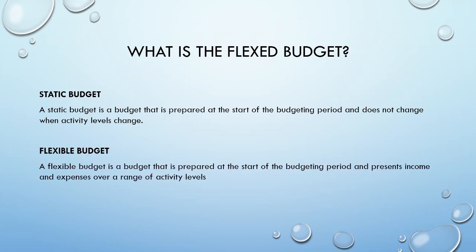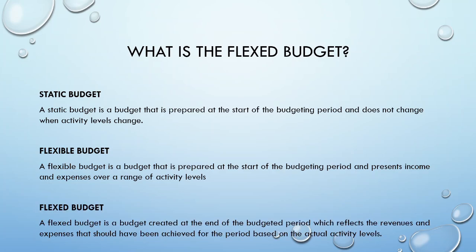Next, we have a flexible budget. This budget is also prepared at the start of the period, but unlike the static budget, it accommodates a range of activity levels. Finally, we have the flexed budget. Unlike the previous budgets, this one is created at the end of the period and reflects what should have been achieved given the actual activity levels.